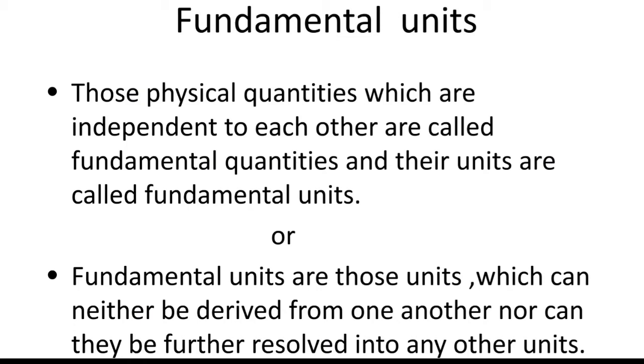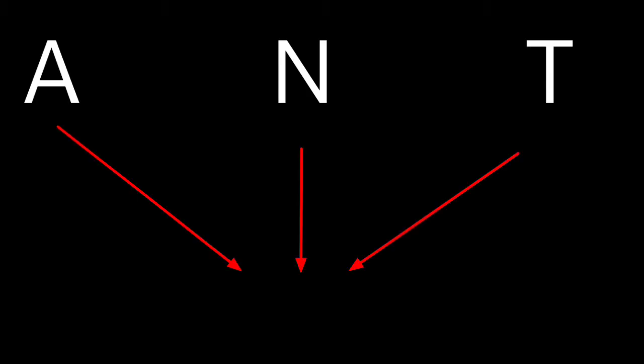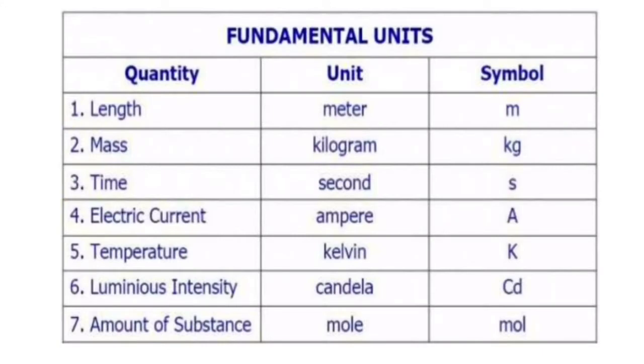For example here you can see the alphabets A, N, and T. These three are alphabets, they are independent. A is not derived from the N and N is not derived from the A and also T. So all these three are independent but when you see these three are combined to form ANT. So whatever units that are derived from the fundamental units, if you consider A, N and T as the fundamental, using the combination of these fundamental units you can form other type of units.